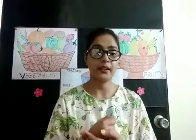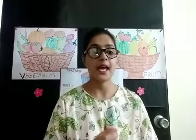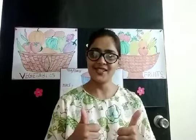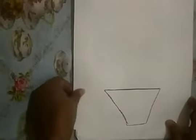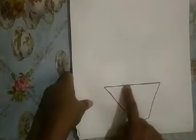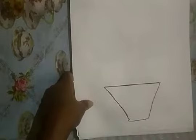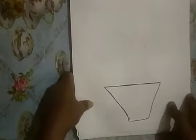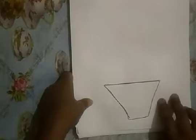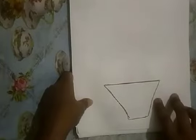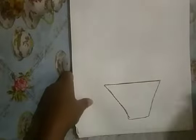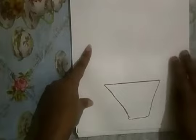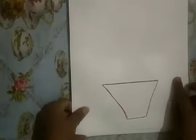Now take out your drawing book and make a flower pot. Today we will see how a plant grows with seeds and what is the procedure of plant growth. Now first of all, make a pot — a flower pot, a plant pot.